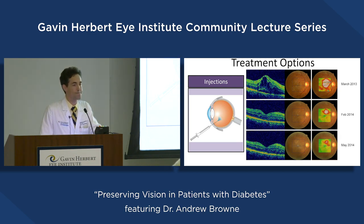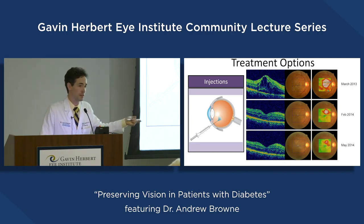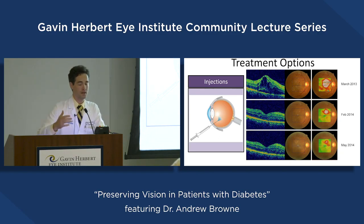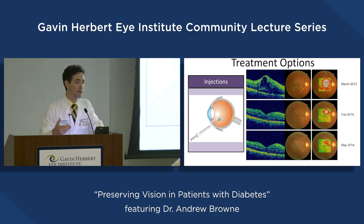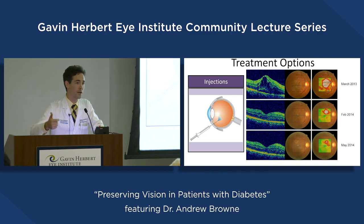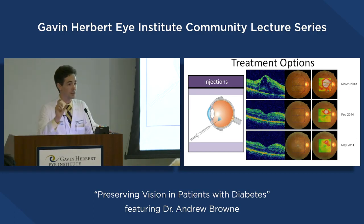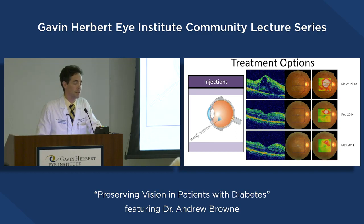Q: If injections go on for a year with no improvement, what happens? A: We use the same medicines as for macular degeneration and retinal vein occlusion. If someone's not getting better, it could be because they have no blood flow in their fovea. We consider all aspects: visual acuity numbers, patient self-report, imaging, and clinical examination — those four elements determine whether to continue injections.